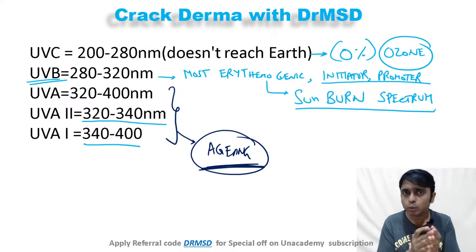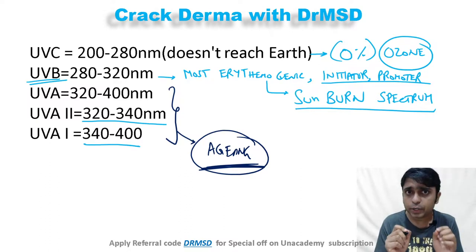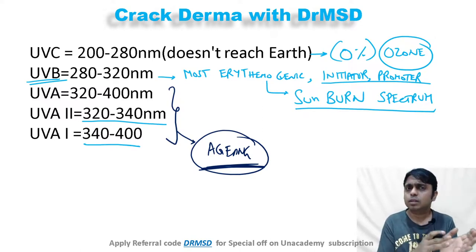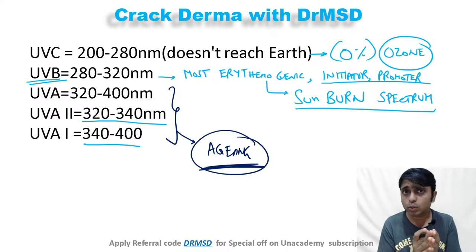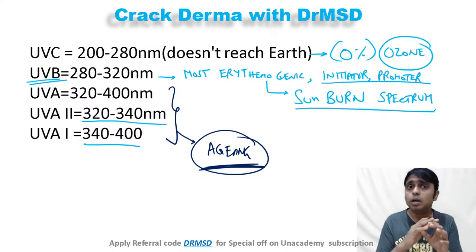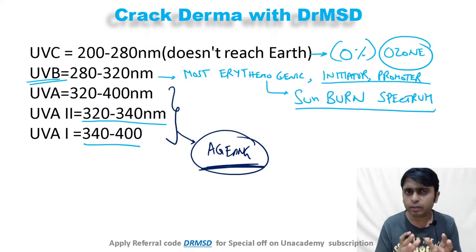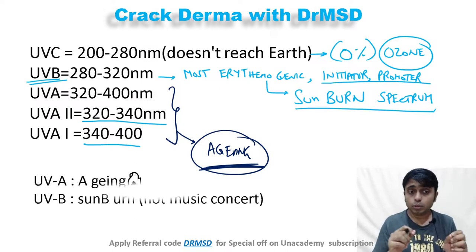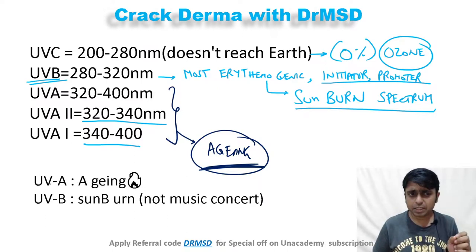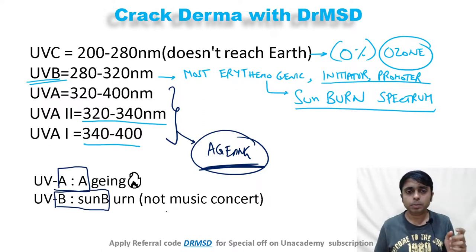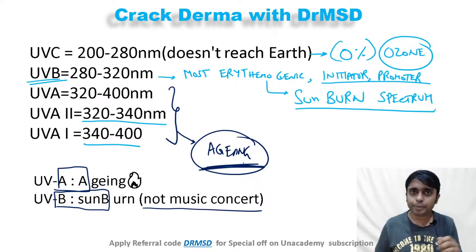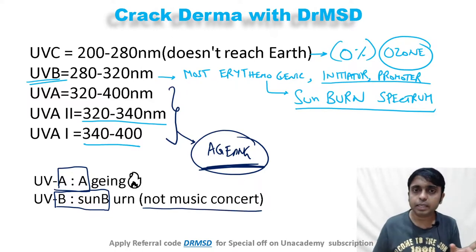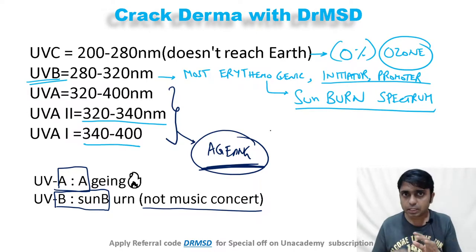In the future I will include explanations about narrowband UVB rays, PUVA, psoralens and UVA rays, their usage in psoriasis and vitiligo. Please subscribe to get notifications. A simple memory trick: small A for aging, B for sunburn — so UVA causes aging and UVB causes sunburn.